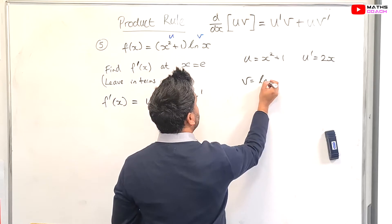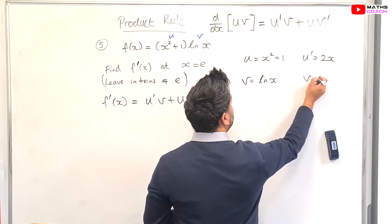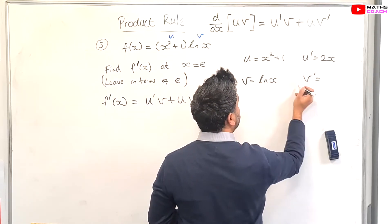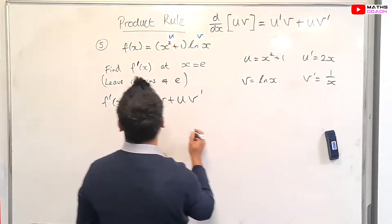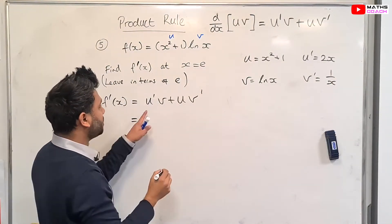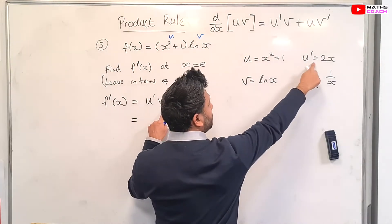v equals to ln x. And we saw in the previous examples that if you differentiate ln x, you get 1 over x. So therefore, the f'(x) is u' times v, so u' times v.